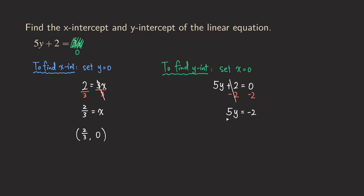So now we need to divide both sides by five so that we can get rid of the five in front of y. So we get y equals negative two over five.